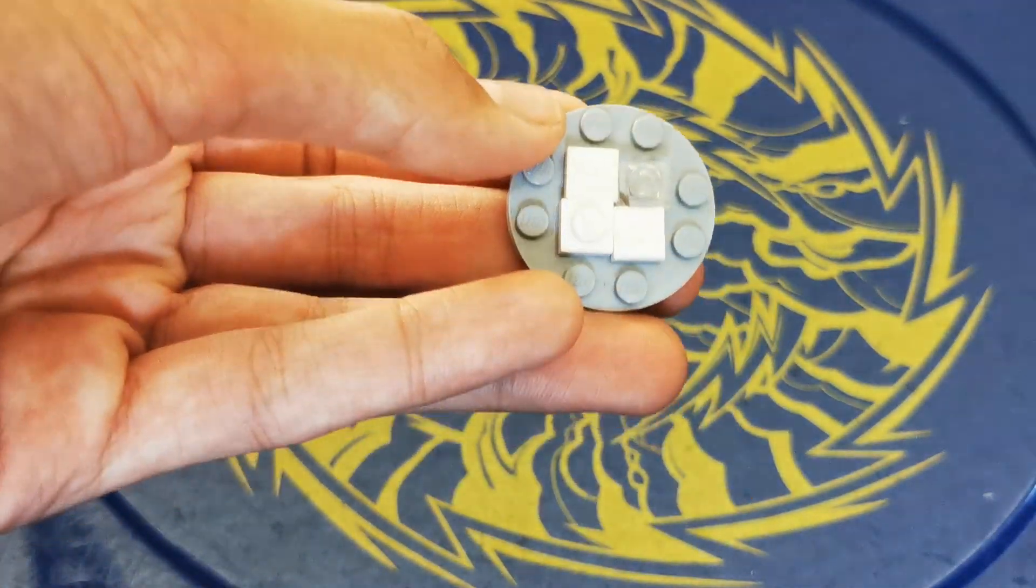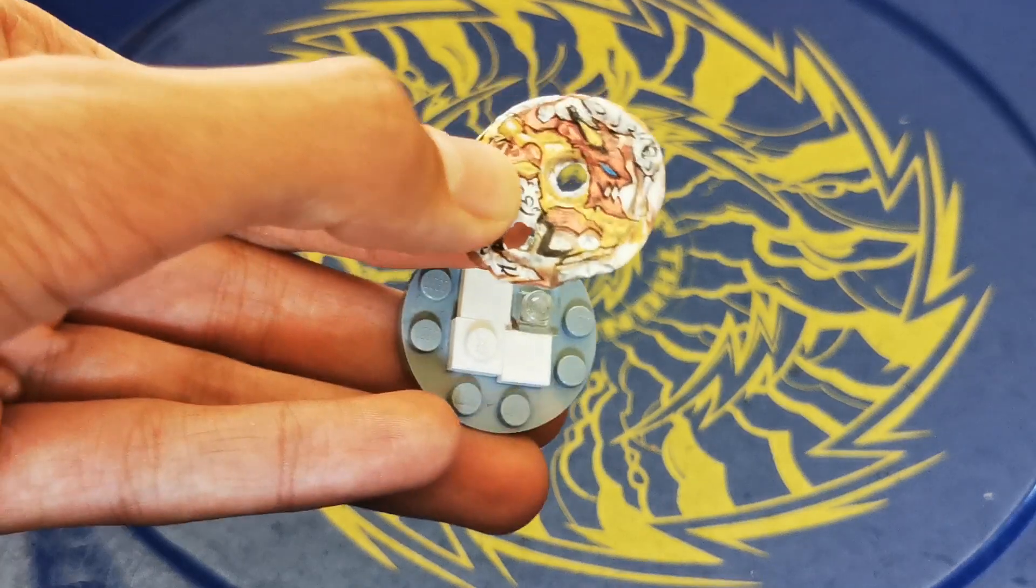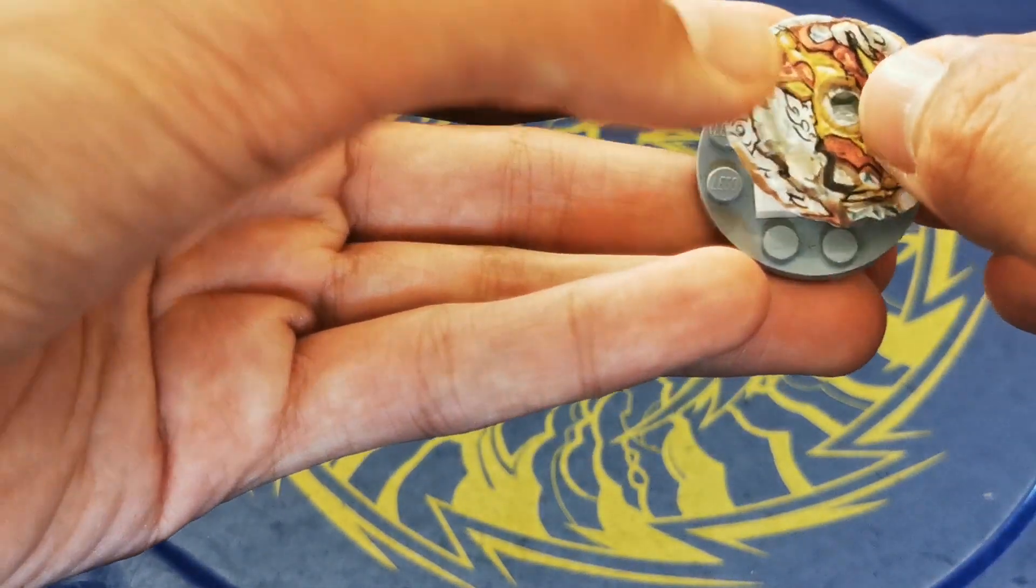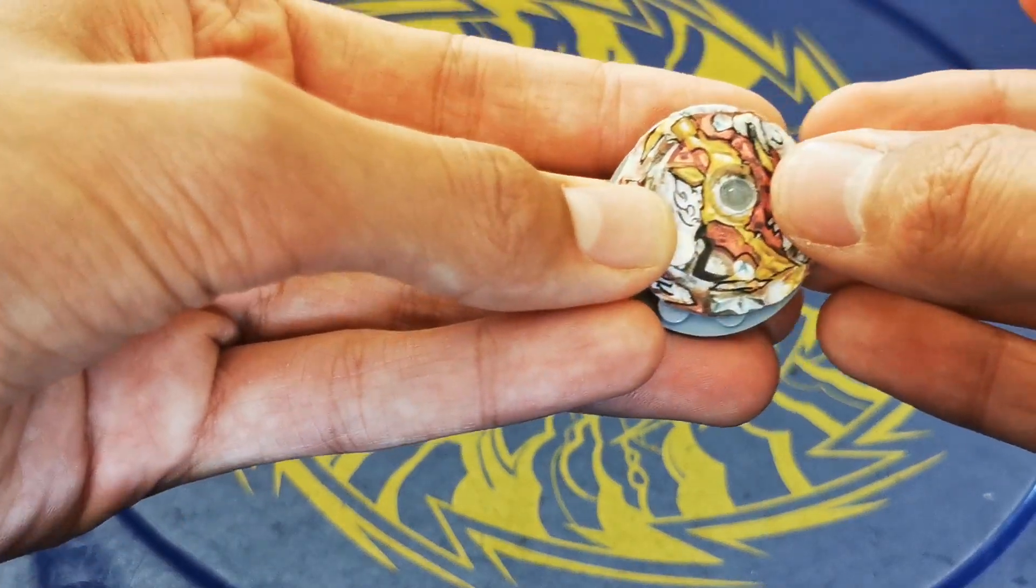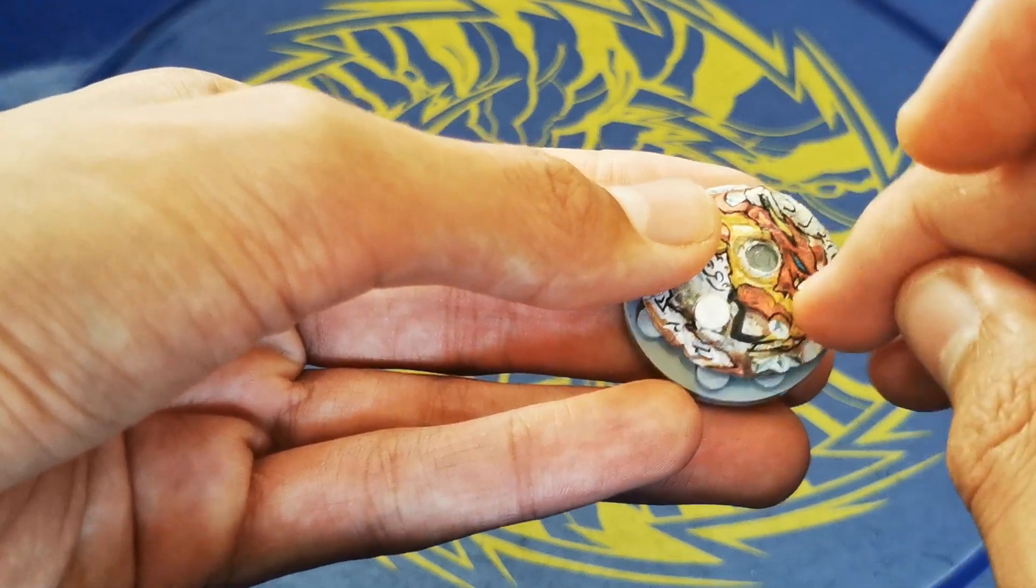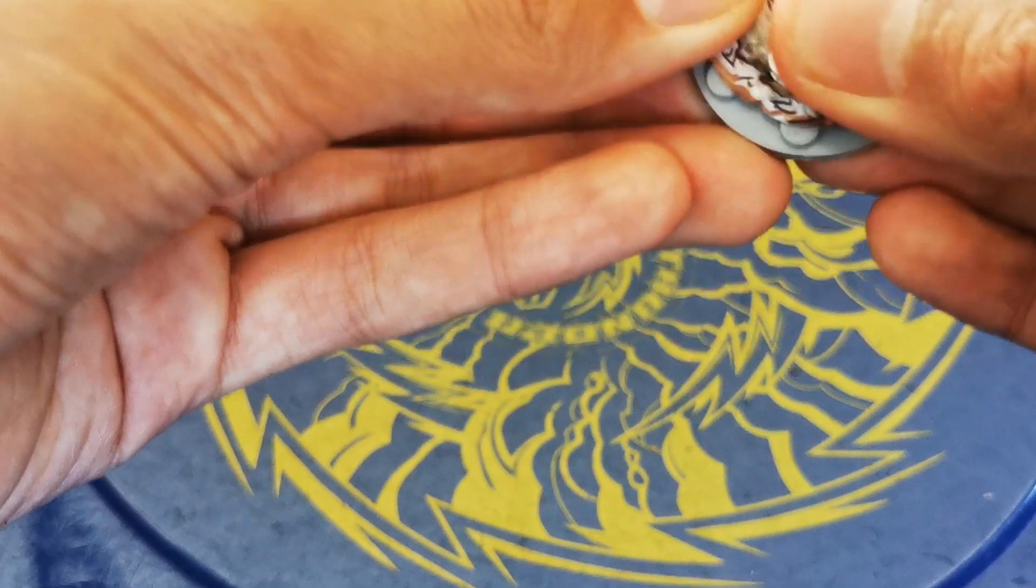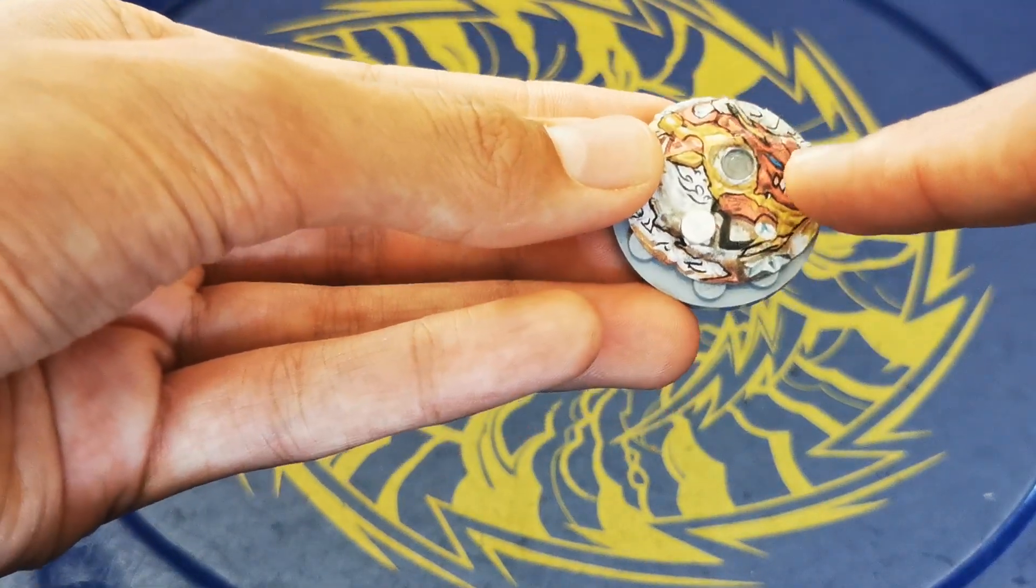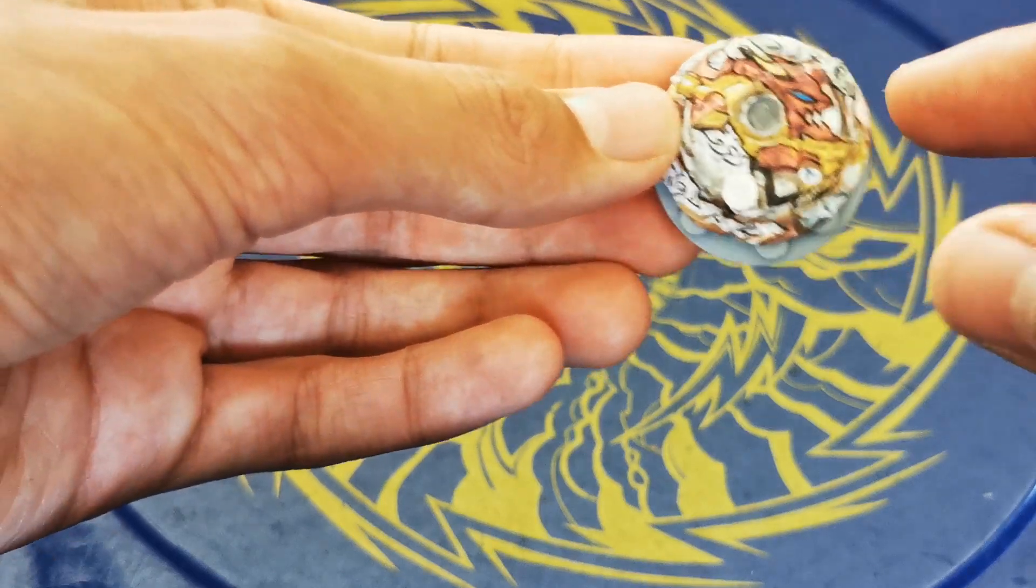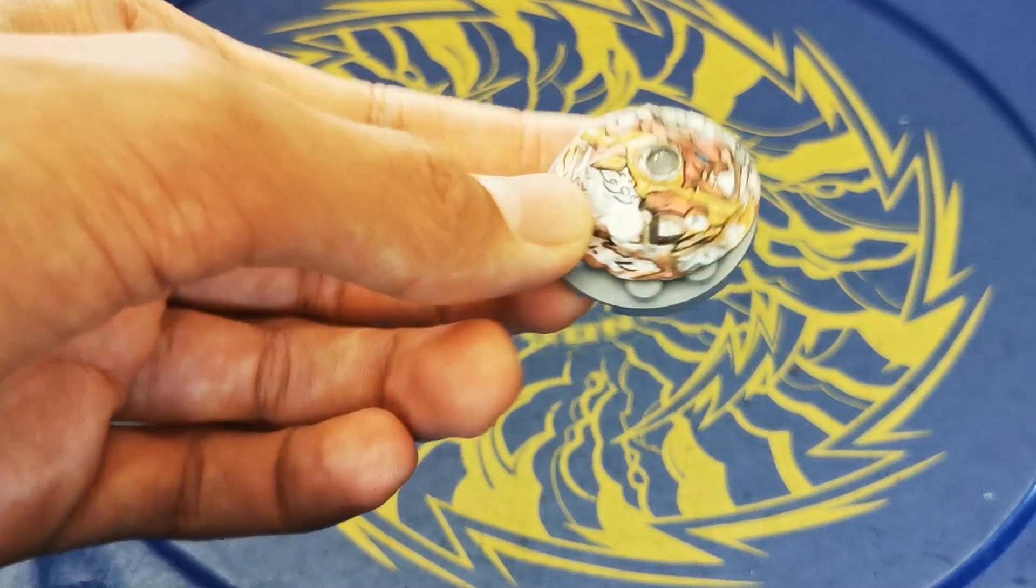Then print out a sticker of Burst Spryzen's chip and cut out two holes to match with these parts here. Make sure that the see-through hole is actually cut out where it would normally have the S picture. Also outline all important shapes on the DB chip to make it pop a bit more, because it's not as three-dimensional.